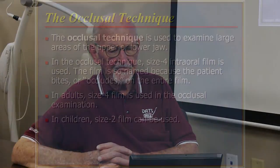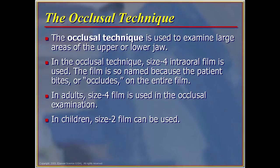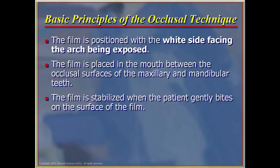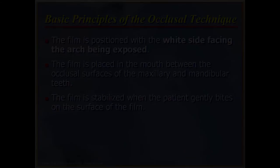The occlusal technique is used to examine large areas of the upper or lower jaw. A size 4 film is used; the patient bites or occludes on the entire film without any holder. An adult-size film is used in the occlusal examination; in children, a size 2 film can be placed in the same relative position. The film is positioned with the white side facing the arch being exposed and placed in the mouth between the occlusal surfaces of the maxillary and mandibular teeth, stabilized when the patient gently bites on it without distorting the placement.